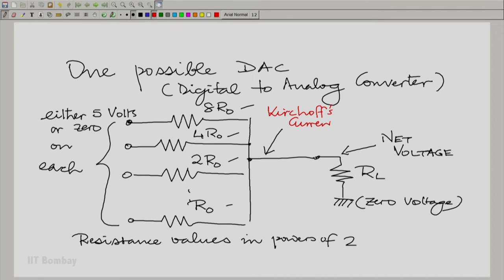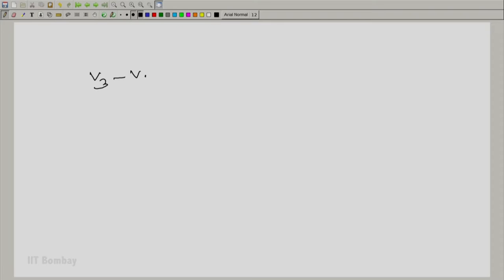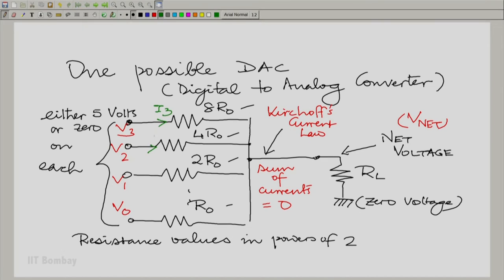Let us write the Kirchhoff's current law at this point and let us call these voltages here either 5 volts or 0. Let us call this voltage V0, V1, V2 and V3 and the net voltage is Vnet. Let us write down the Kirchhoff's current law which says that the net voltage as seen here would obey that the sum of currents coming in here must be 0. Let us write down current names as well. Let us call this current I3, similarly I2, I1, I0 and let us call this current IL.